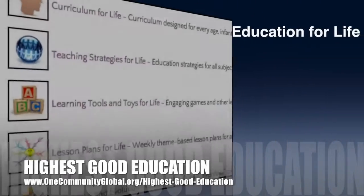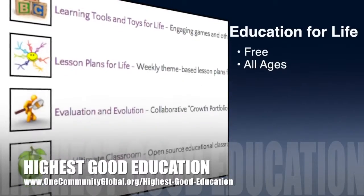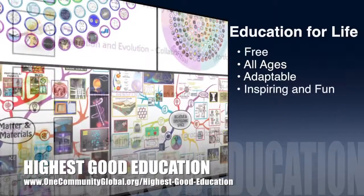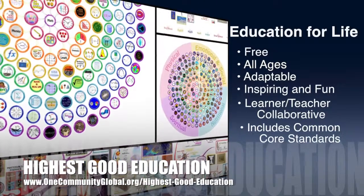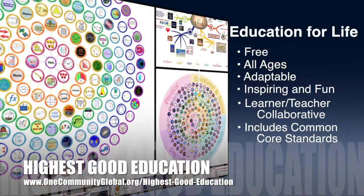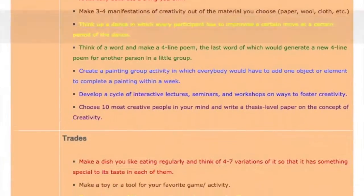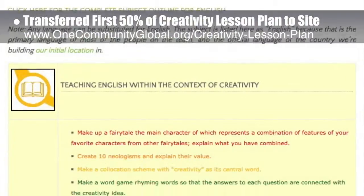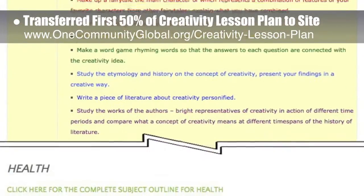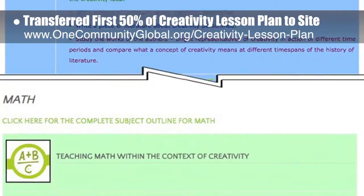One Community's approach to highest good education is open source and free shared, designed for all age groups, adaptable to any schooling environment, inspiring and fun for all participants, a learner-teacher collaborative, and includes U.S. common core standards. This week the core team transferred the first 50 percent of the written content for the creativity lesson plan to the website. This lesson plan is purposed to teach all subjects to all learning levels in any learning environment using the central theme of creativity.